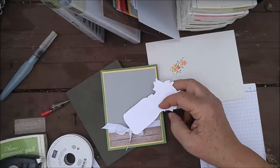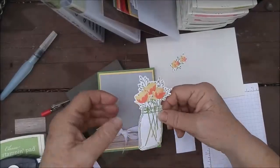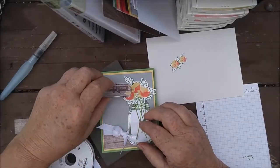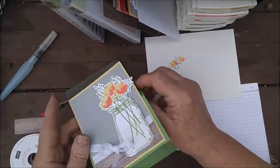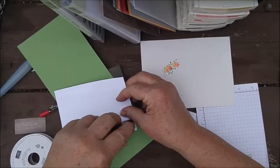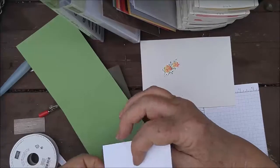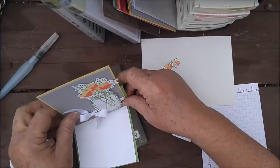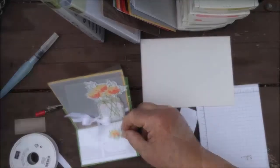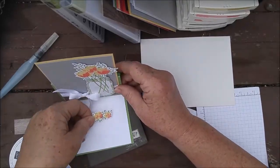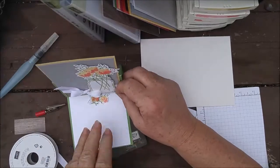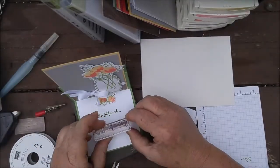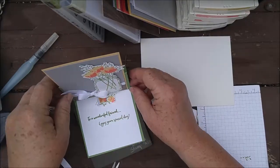And adhere this to my Sew Saffron. And this with dimensionals. I like it. And let's see. Do I have room for it? Oh, I do not. So I'm just going to put my white on the inside. I need a layer of white. Decide where I want these flowers. And I need to put these on with dimensionals. And then I can stamp here my greeting. To a wonderful friend. Enjoy your special day. And there's my card.